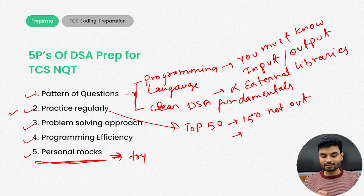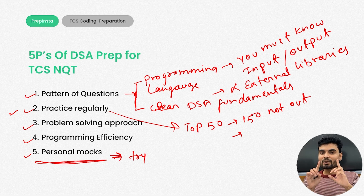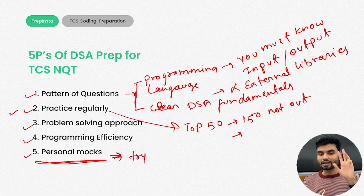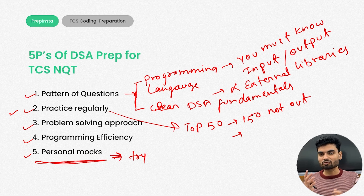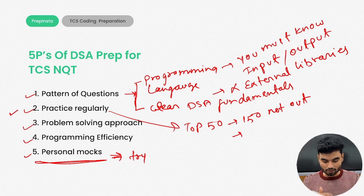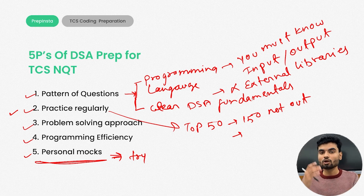Trust me — these five P's: first, clear fundamentals of programming and DSA; practice regularly using the three resources — top 50 TCS questions from my YouTube video, previous year papers, and 150 not-out questions. That's more than enough for practicing DSA. Then for programming efficiency, once you have the logic, think about how you can reduce errors and optimize. Then do personal mocks to simulate a real coding exam.